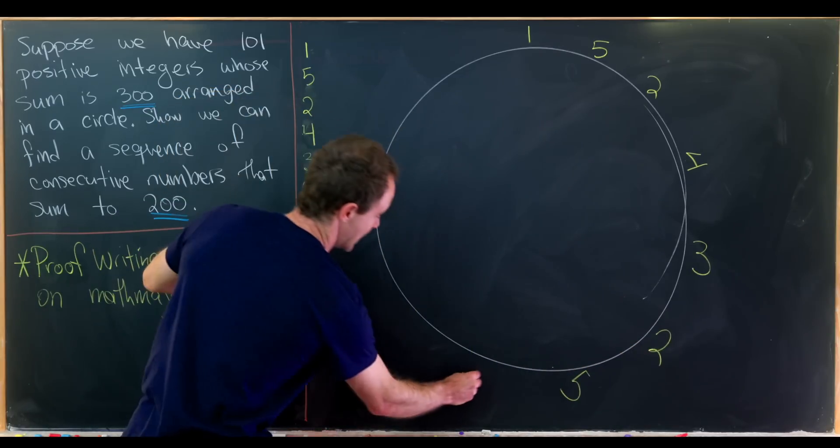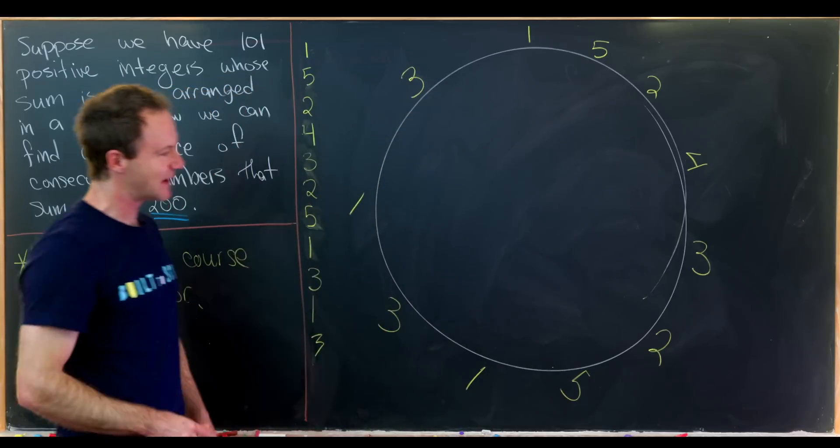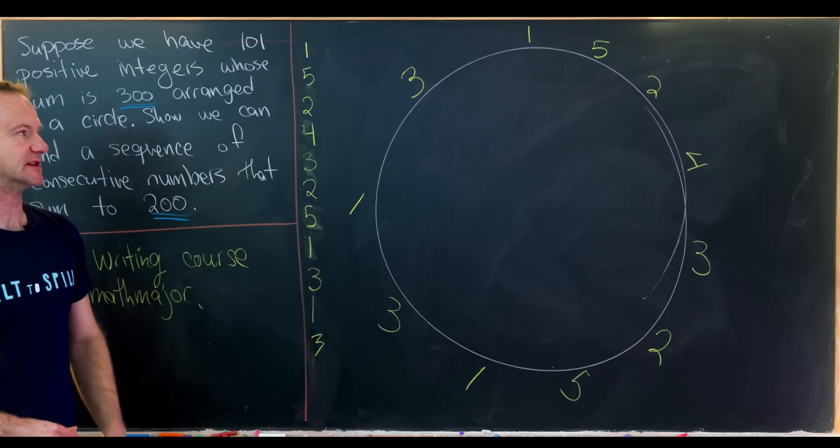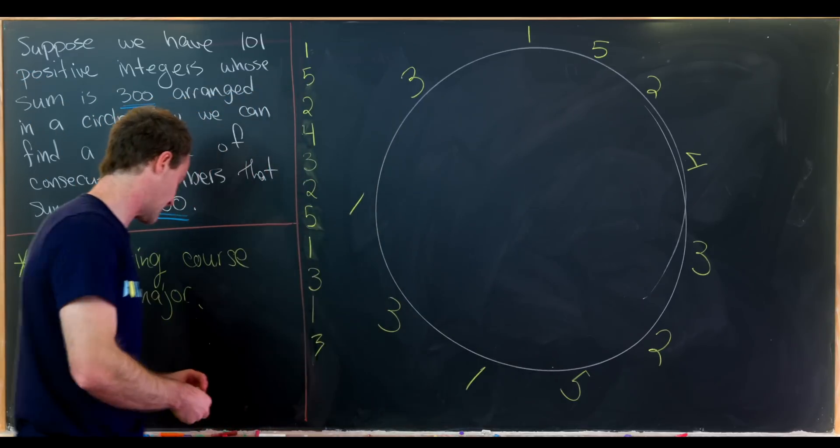5 here. So now we're there. And now we have 1, 3, 1, 3. So my spacing isn't great but I think you get the idea. So if we add all the way around the circle we get 30.